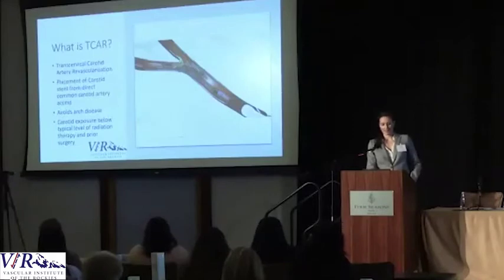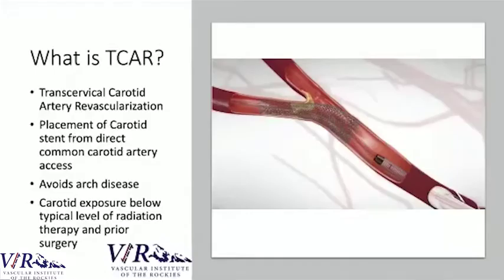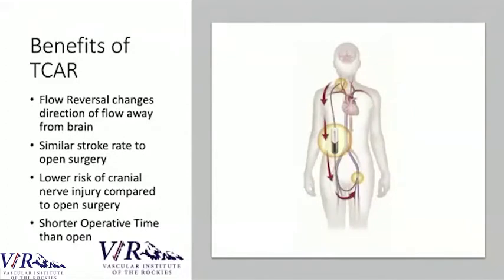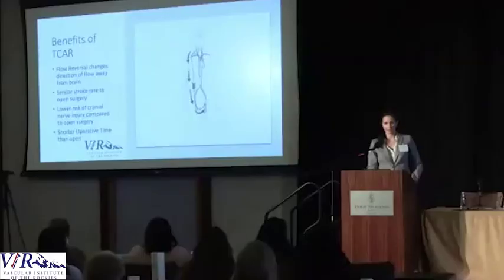So what is TCAR? We place the stent via direct access to the carotid artery, avoiding arch disease. The incision is quite low, out of the range of typical prior surgeries and most head and neck cancer radiation fields. Importantly, TCAR uses a flow reversal system. In traditional transfemoral stenting, placing wires across the narrowing risks breaking bits of plaque loose, so a distal embolic filter — basically a net — is used to catch debris. In TCAR, an ingenious flow reversal system is used instead.